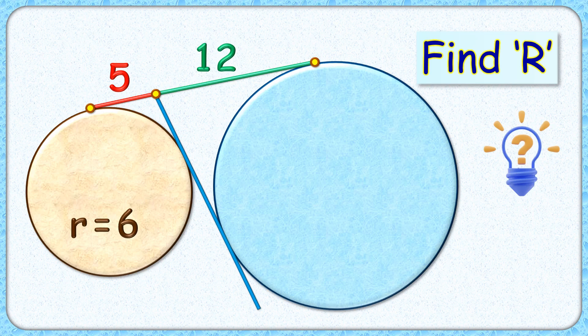Welcome everyone to this interesting question. We have two circles with a blue line as a transverse common tangent and this line as your direct common tangent. The length of direct common tangent is divided into 5 and 12 centimeter. The radius of this brown circle is 6 centimeter. The exciting part is with this limited data we have to find the radius of this blue circle.